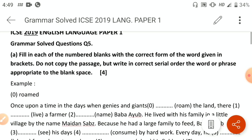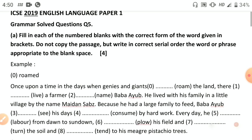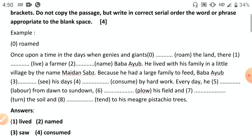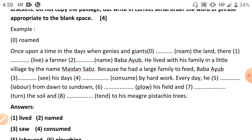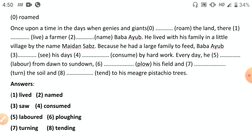The first question, number five, requires filling in the blanks with the correct tense. The passage begins: 'Once upon a time, in the days when genies and giants roamed the land, there lived a farmer named Baba Ayu.' Since the first word is in past tense, throughout the passage it will follow past tense, with few exceptions.